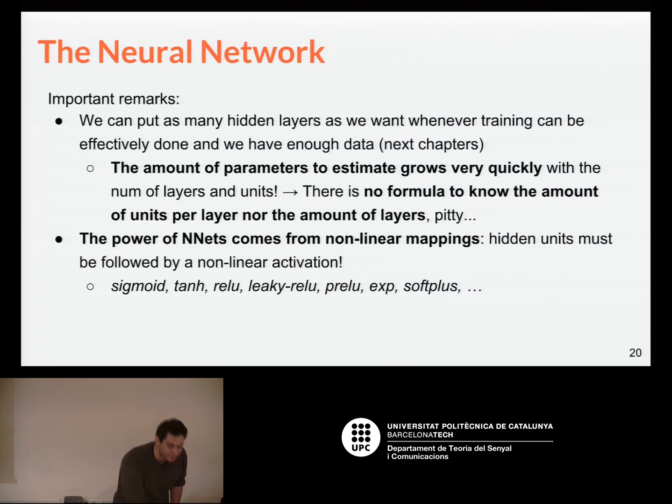And some important remarks I wanted to give to you from this introduction is that we can put as many hidden layers as you want, but you will get more and more and more parameters. And you have to be aware of that because you may need a lot of data to let it learn automatically from that. And there is no formula to know the right amount of parameters, the right amount of layers and hidden units. It's just a trial and error, as you will see.